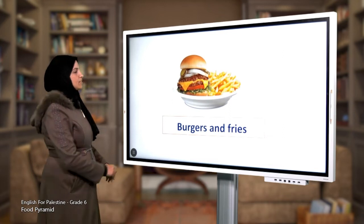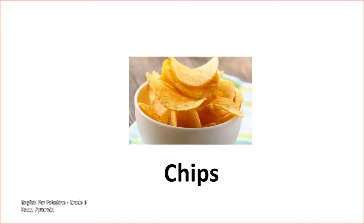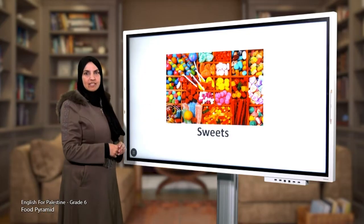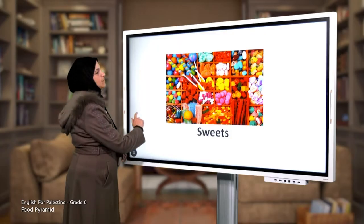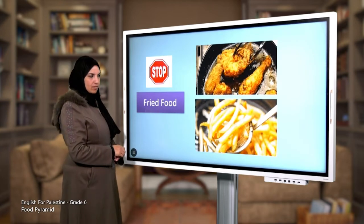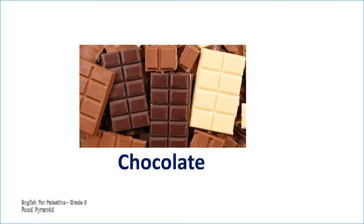You shouldn't eat lots of burgers and fries. What is this? Excellent — chips! Now these are sweets, they are unhealthy, you shouldn't eat lots of sweets. This is fried food — stop eating fried food, it is unhealthy. And this is chocolate — you shouldn't eat lots of chocolate.